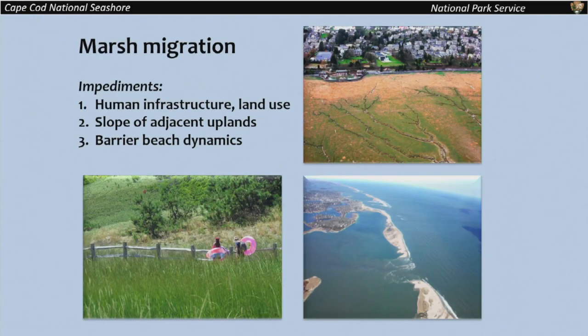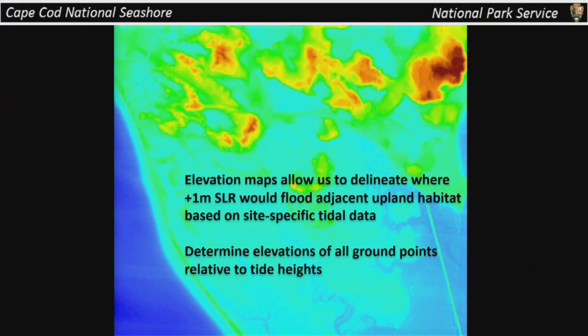The problem is the borders of a lot of these salt marshes have been highly developed, so marshes can't really go anywhere. They can't grow through a supermarket parking lot or a subdivision. There are also natural barriers like steep slopes of adjacent uplands that can prevent marshes from migrating landward very far. And then we have barrier beaches, which provide great opportunities for marshes to migrate to, but they're being consumed by sea level rise and are expected to fall apart with continued sea level rise — so we're losing some migration opportunities there as well.